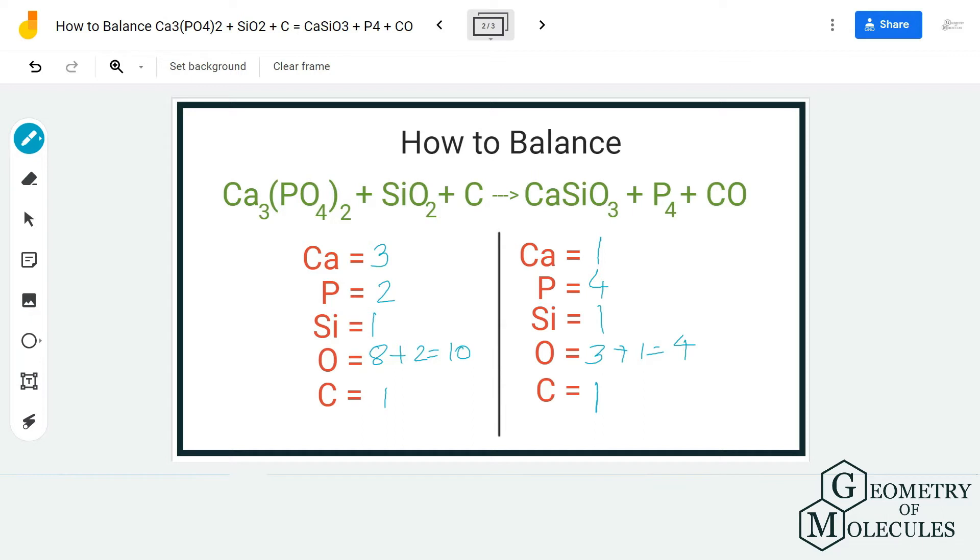Remember to start with the atoms that are easy to balance, then move forward to balancing oxygen or atoms that are alone. Like here we have carbon atom in the reactant that we can balance at the last because it would be easier to add a coefficient and balance this equation.